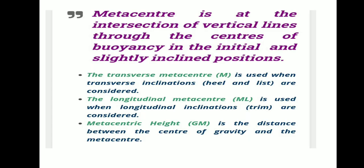There are different types of metacenter. That is, transverse metacenter, which is used when transverse inclination — that is, heel and list — are considered. And longitudinal metacenter means the line to inclination when mainly trim is considered.